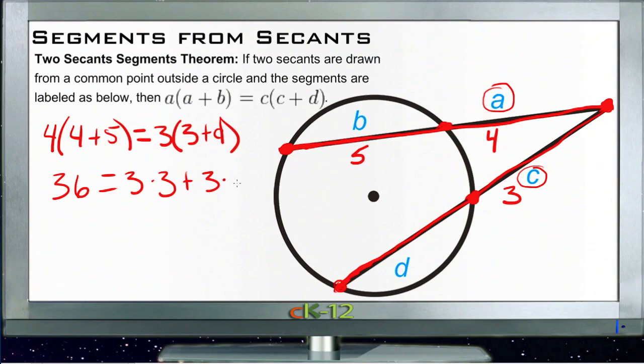And then three times three is nine, so we could subtract nine from both sides, and we'd get 27 is equal to three D, divide both sides by three, and we get nine is the same thing as D.